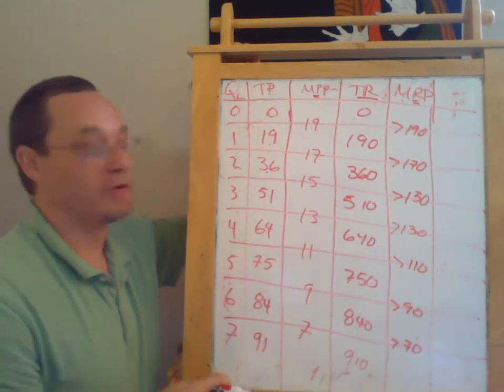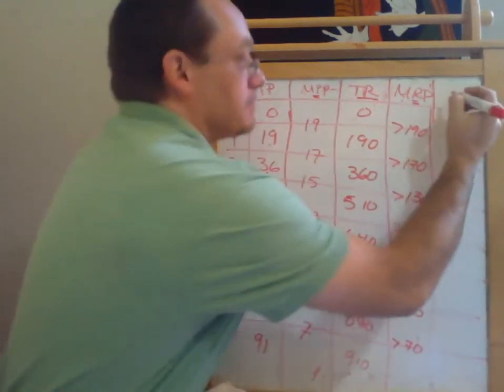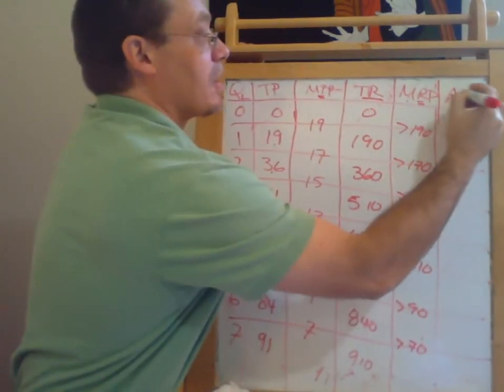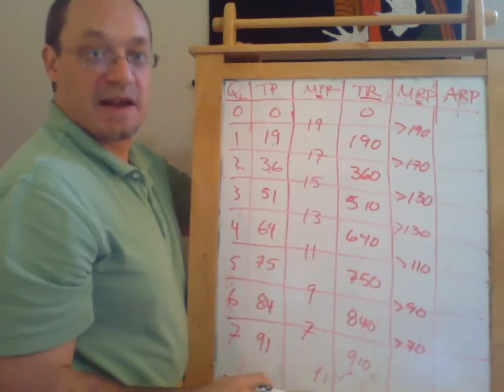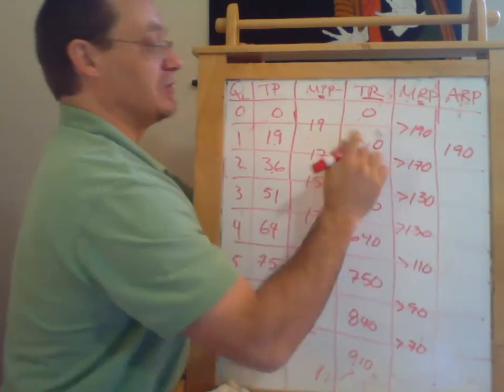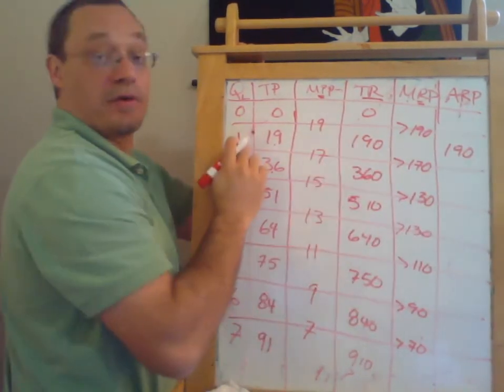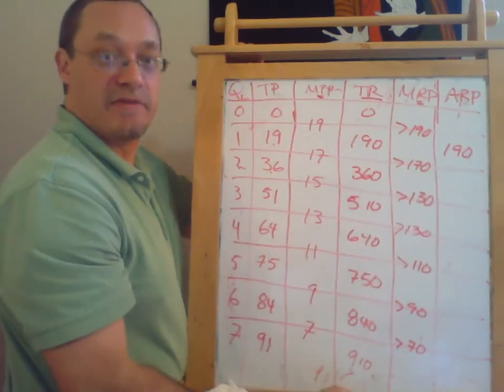Okay, so far so good. We also could compute average revenue product. So that's measuring the average economic productivity of our workers. And for one worker, we had total revenue divided by the quantity of workers, and that gets us $190 of revenue per worker.